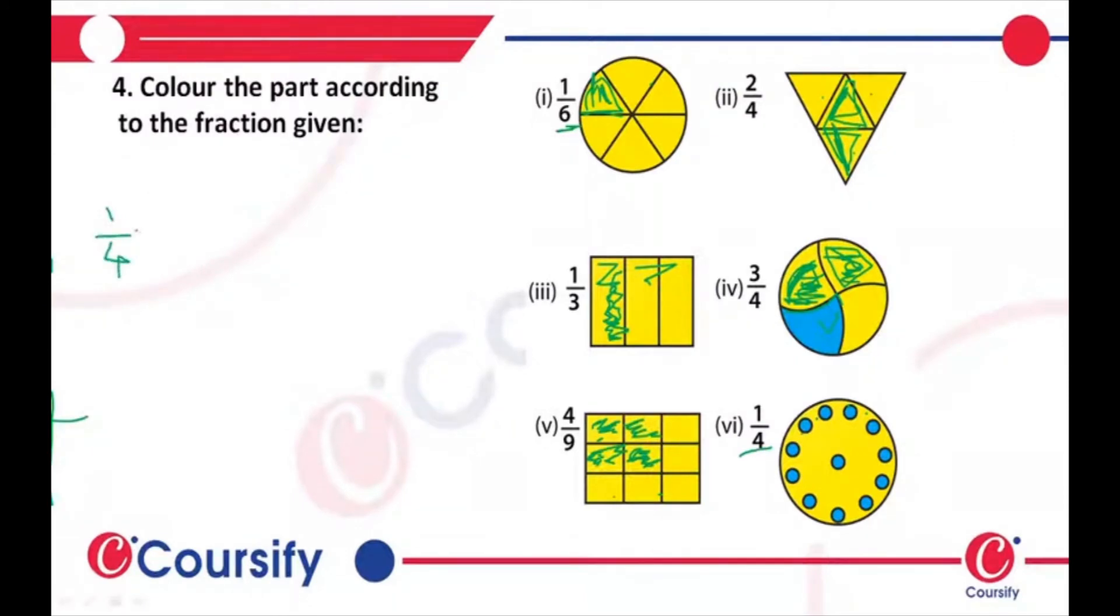1/4 times 3/3. 3/3 is 1, so 1 times 1/4 is 1/4, which will be equal. When we multiply, 3 times 4 is 12, so it's equal to 3/12.